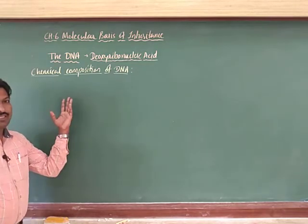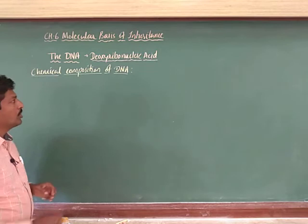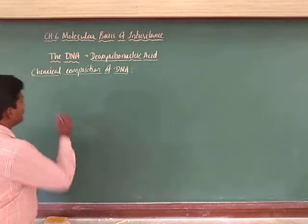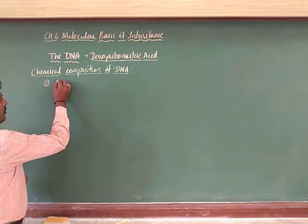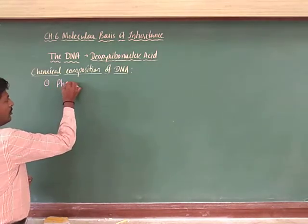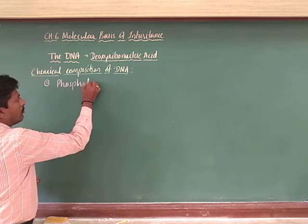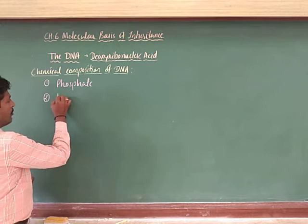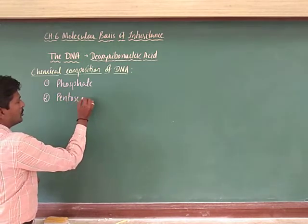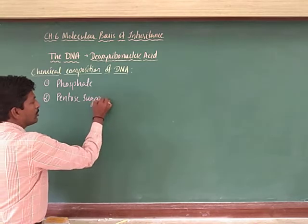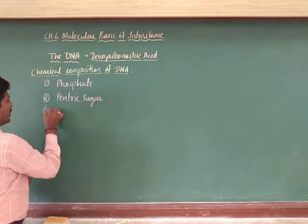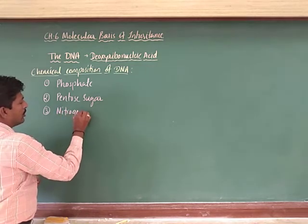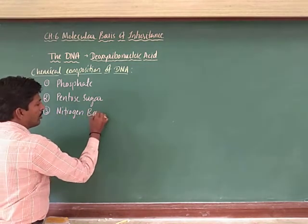Since DNA is a nucleic acid, there are three important components that must be present. The first one is phosphate, the second one is pentose sugar, and the third component is nitrogen bases.